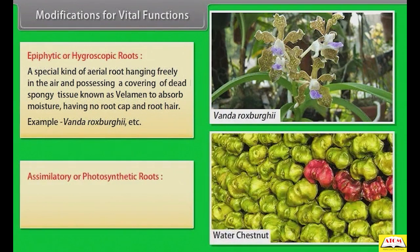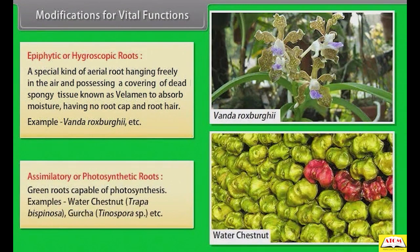Assimilatory or photosynthetic roots are green roots capable of photosynthesis. Examples: water chestnut, Gursha, etc.